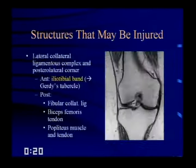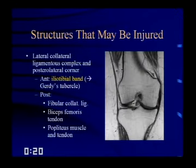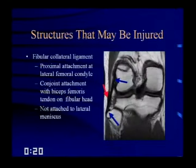The lateral collateral ligament structures and posterolateral corner include, anteriorly, the iliotibial band, which has several insertions but primarily inserts on Gerdy's tubercle of the proximal tibia laterally. Posteriorly, you have the fibular collateral ligament, the biceps femoris tendon, and the popliteus muscle and tendon. The fibular collateral ligament has a proximal attachment at the lateral femoral condyle and comes distally to form a conjoined attachment with the biceps femoris tendon on the fibular head. Note that the fibular collateral ligament is not attached to the lateral meniscus.